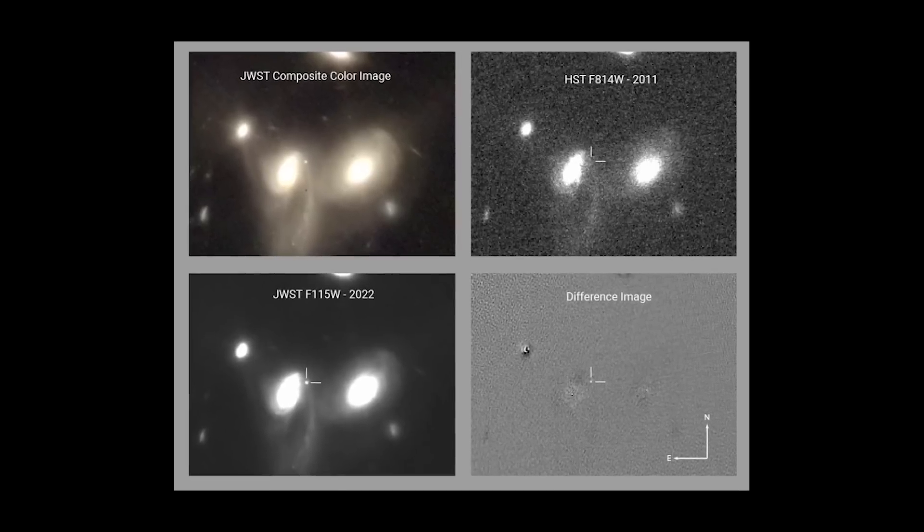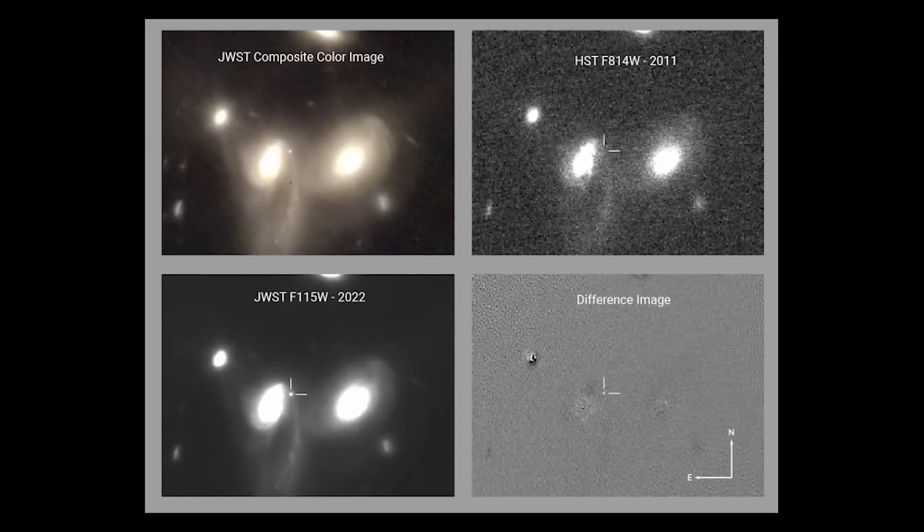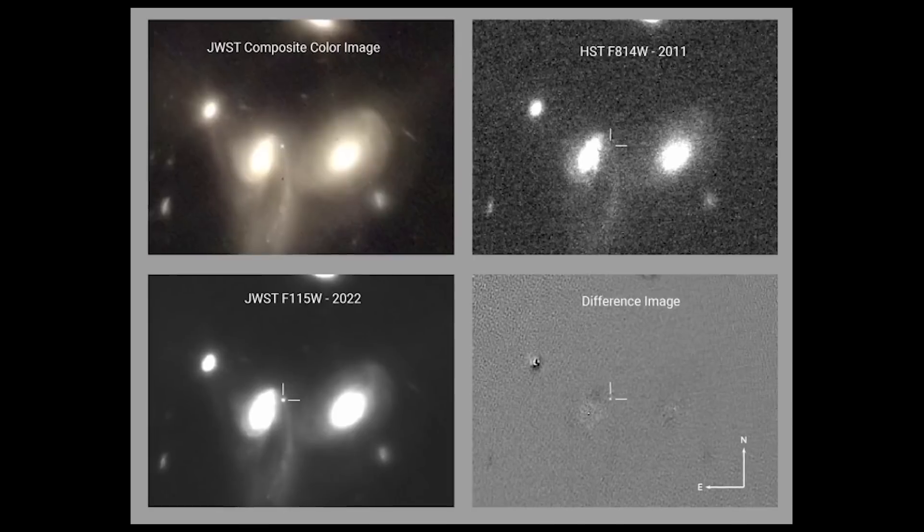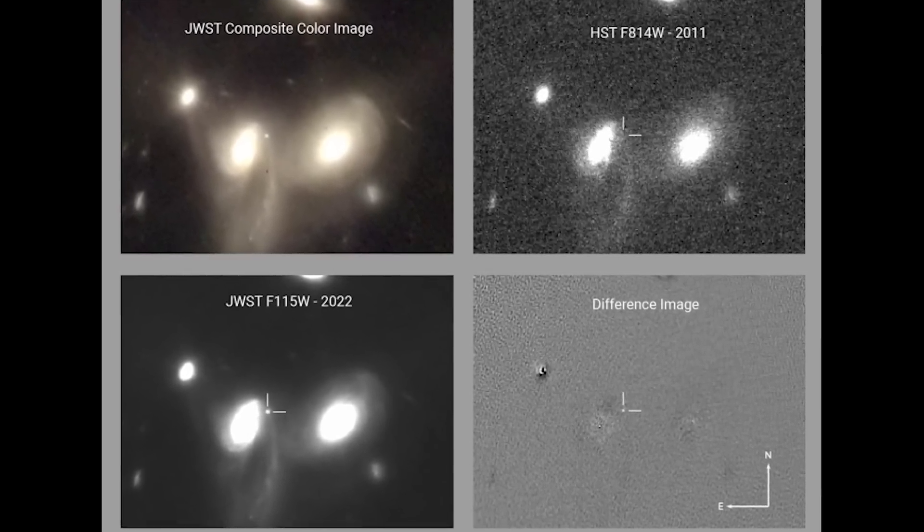Using the NIRCAM instrument, Webb researchers believe they've observed a supernova. They combined Webb data with Hubble data and discovered a bright object that may be a star that has just gone supernova.